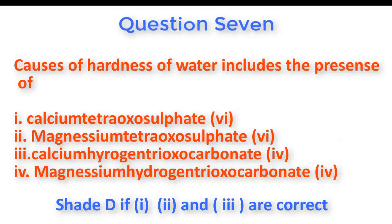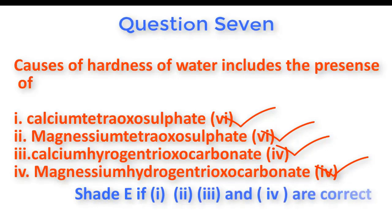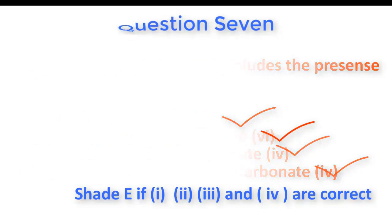Question number seven: Causes of hardness of water include the presence of calcium tetraoxosulfate(VI), magnesium tetraoxosulfate(VI), calcium hydrogen trioxocarbonate(IV), and magnesium hydrogen trioxocarbonate(IV). Obviously, all these compounds are responsible for the hardness of water, so one, two, three, and four are all correct. The right answer is E.